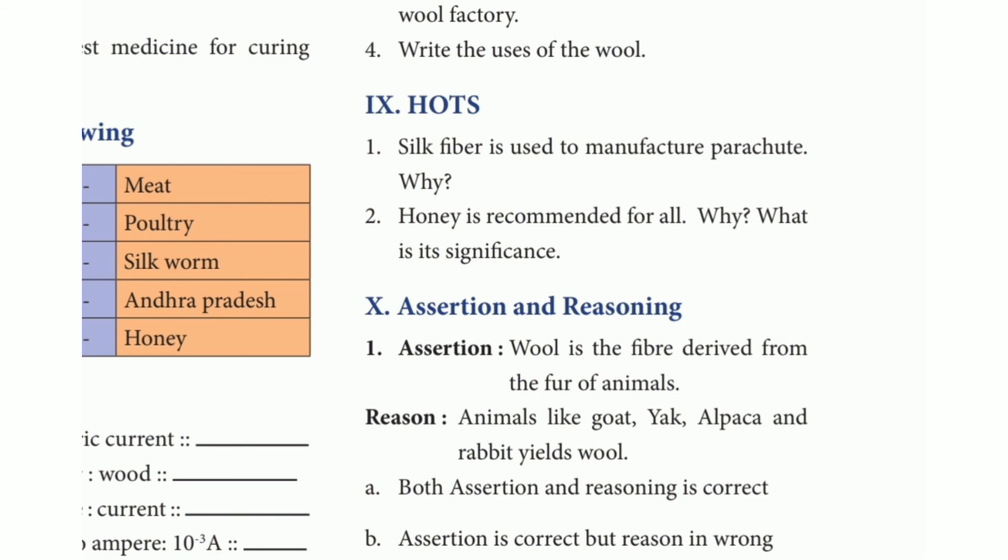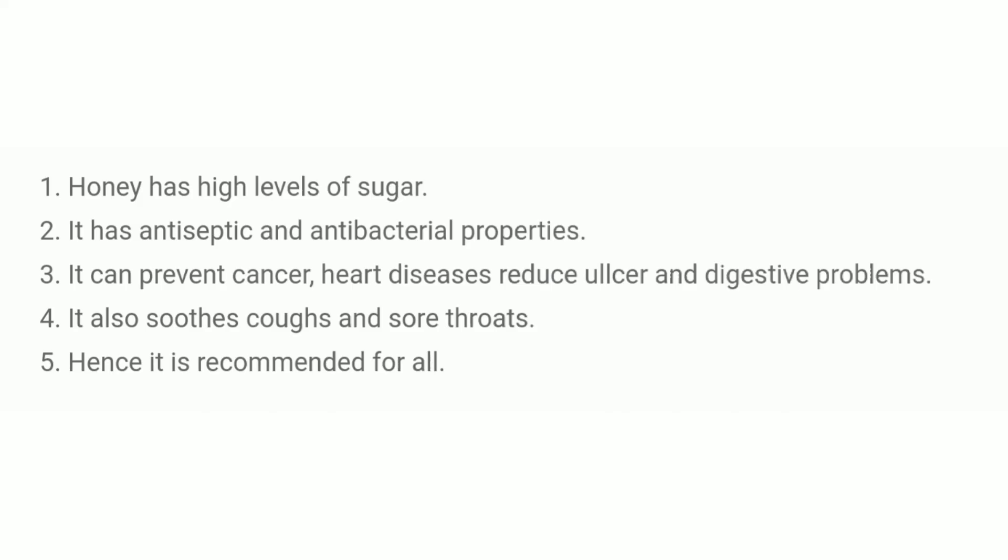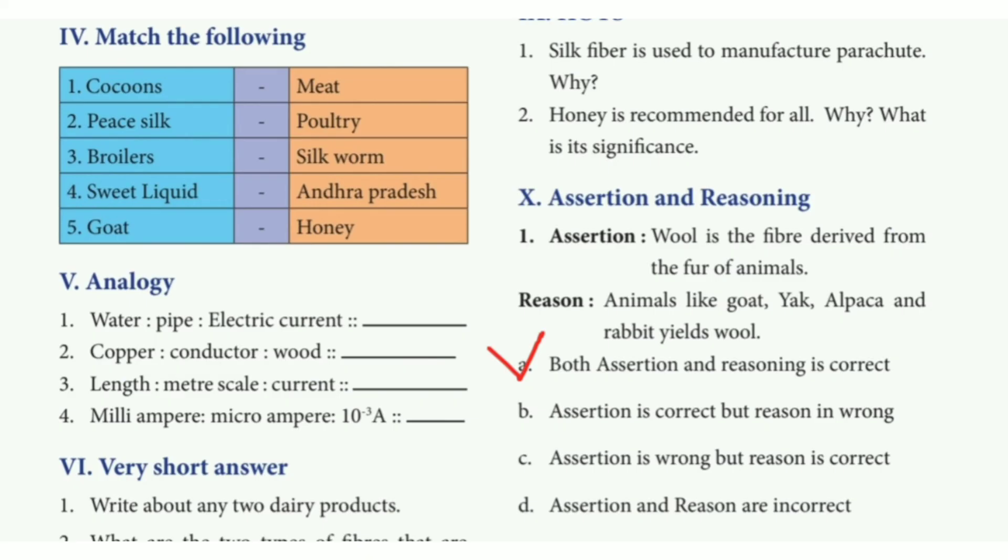Second question: honey is recommended for all — why? What is its significance? Honey has high levels of sugar. It has antiseptic and antibacterial properties. It can prevent cancer and heart disease, reduce ulcers and digestive problems. It also soothes coughs and sore throat. Hence it is recommended for all.